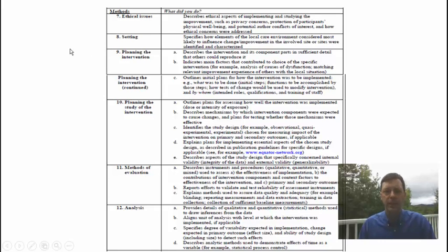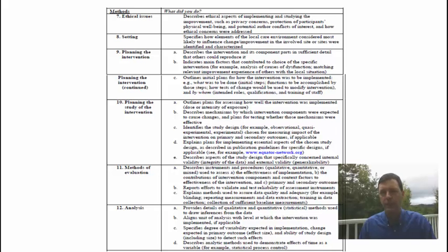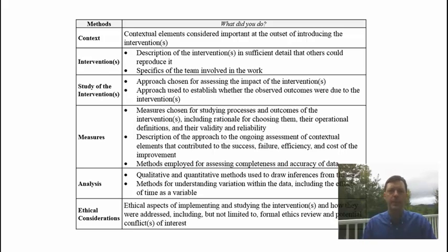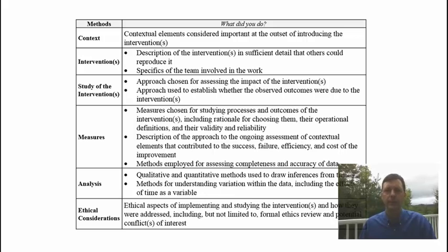Regarding terminology: the methods section of SQUIRE 1.0 was exquisitely detailed but sometimes challenging for individuals. SQUIRE 2.0 uses fewer words and was very carefully and disciplined in its word choices. For example, we don't use the word 'improvement' because it connotes something getting better — instead we talk about 'interventions' and 'studying the intervention.' This encourages more reports, including potentially negative studies, so we can learn from them and share that learning with others.